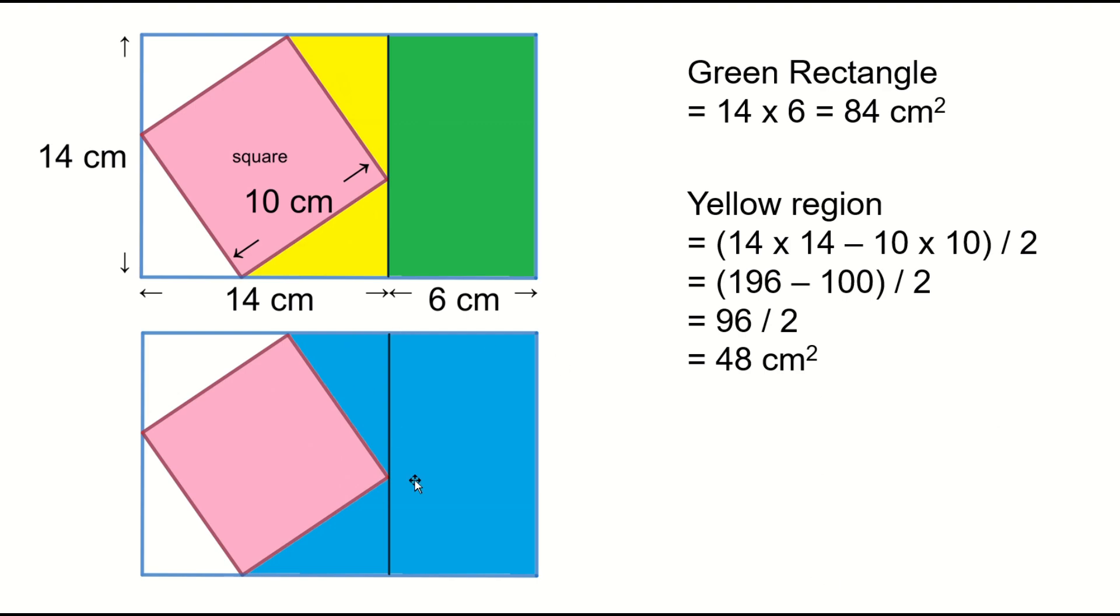Blue region equals green plus yellow. Equals 84 plus 48, equals 132 square centimeters.